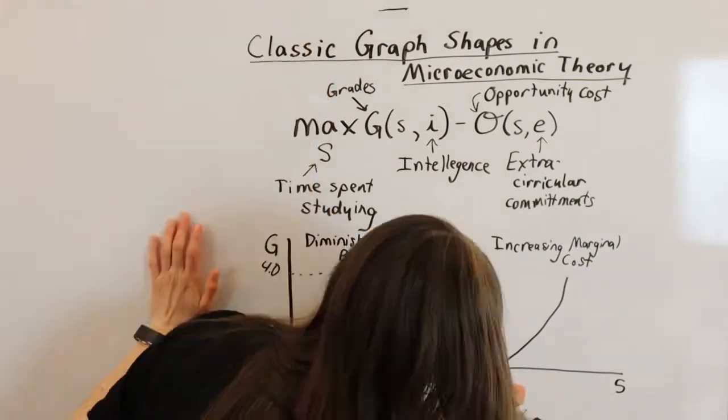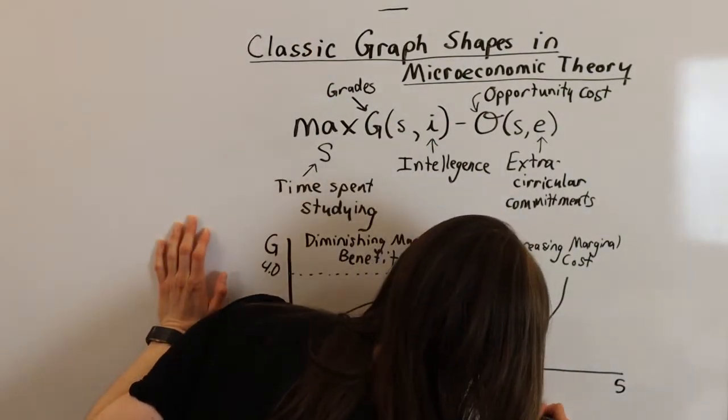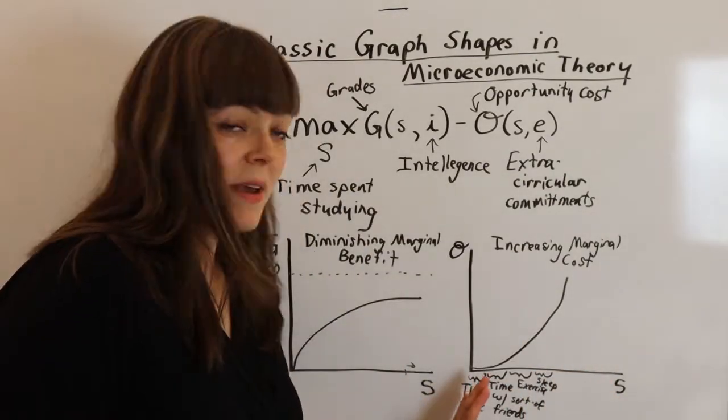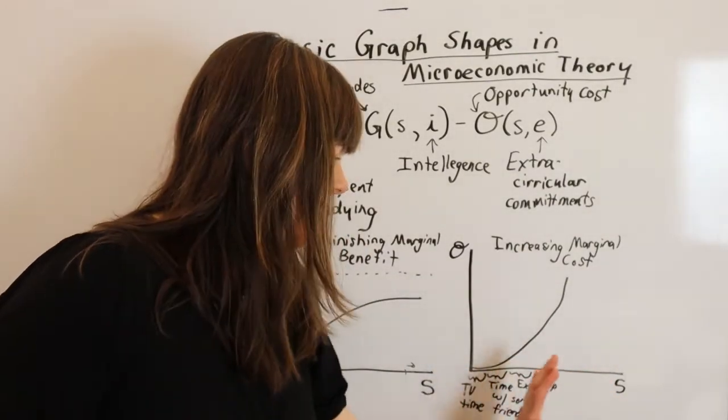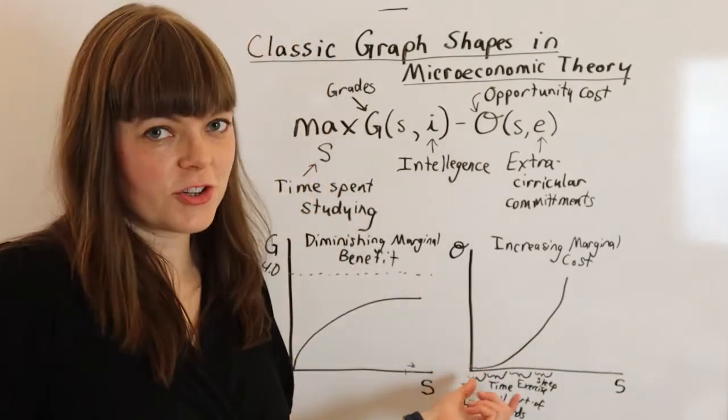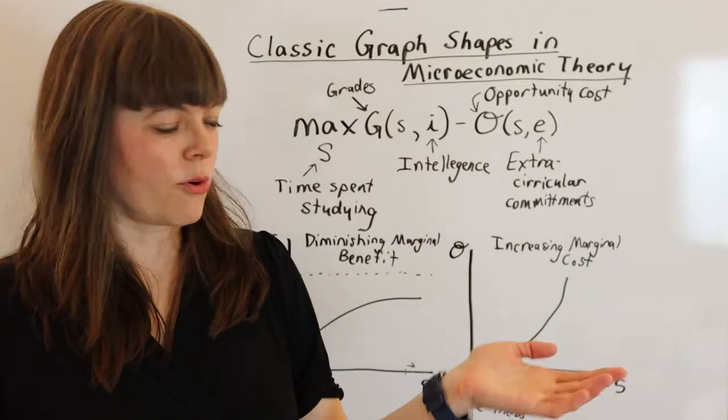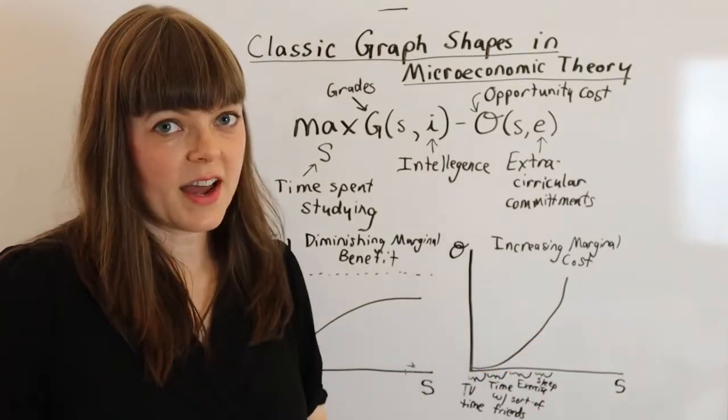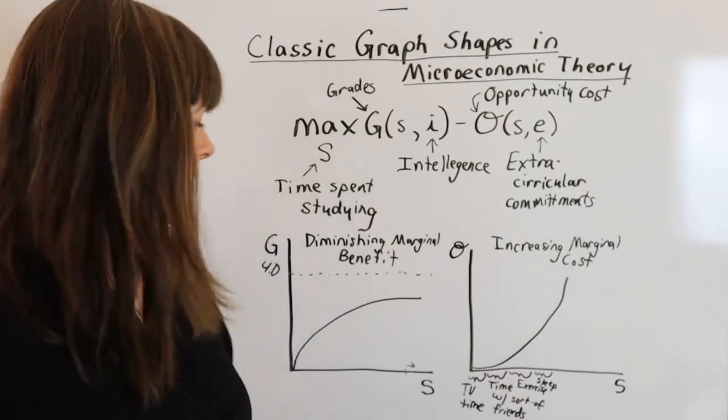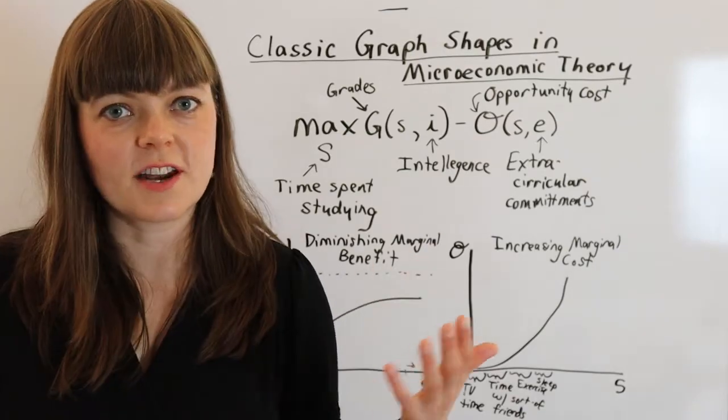So we can even label that. Alright, so you basically order things in your life in the order of importance in terms of giving them up. So first you give up TV time because that's less important to you. And then after that, if you've given up all the TV time you have in your life, what else do you give up to spend an extra half hour studying?